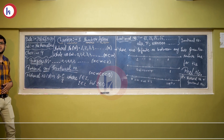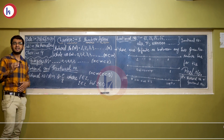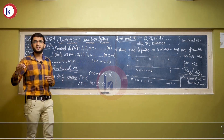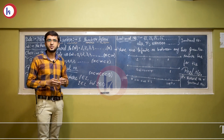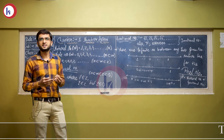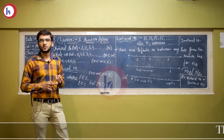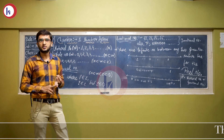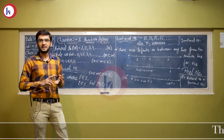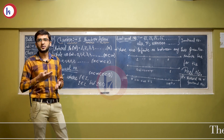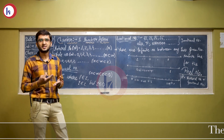The Number System, as you had learned in Standard 8, comprises of different numbers. That is basically natural numbers, whole numbers, integers, even numbers, odd numbers, and prime numbers.